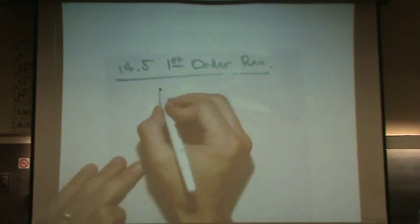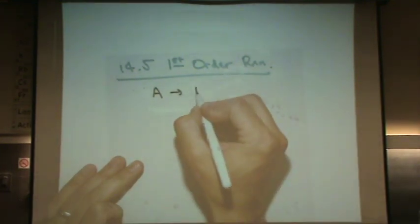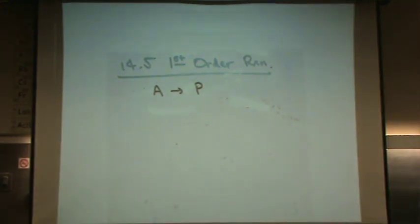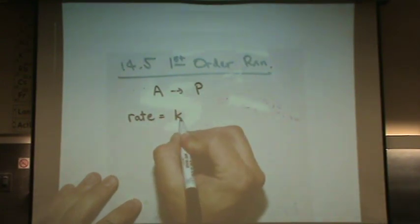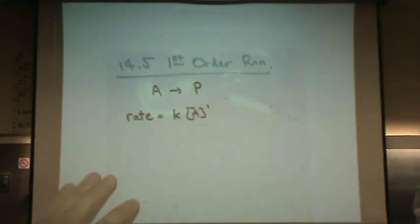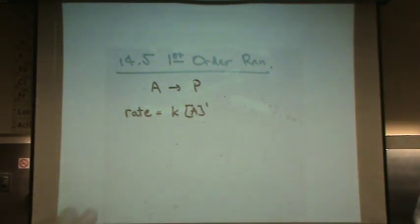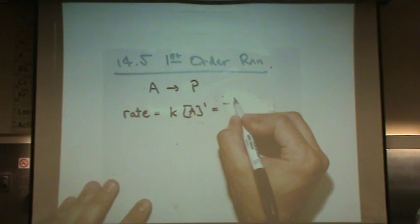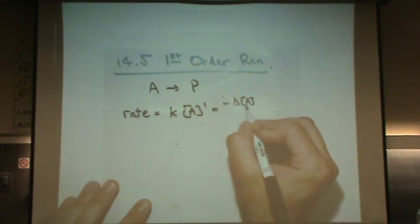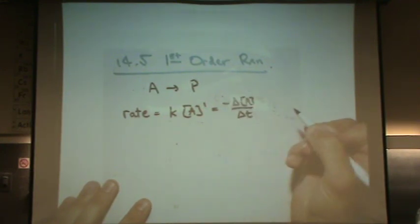Okay, so again, same reaction. A reactant goes to P products. But now the rate law is k times [A] to the first power. And again that's the loss of the change in concentration of A over the change in time.